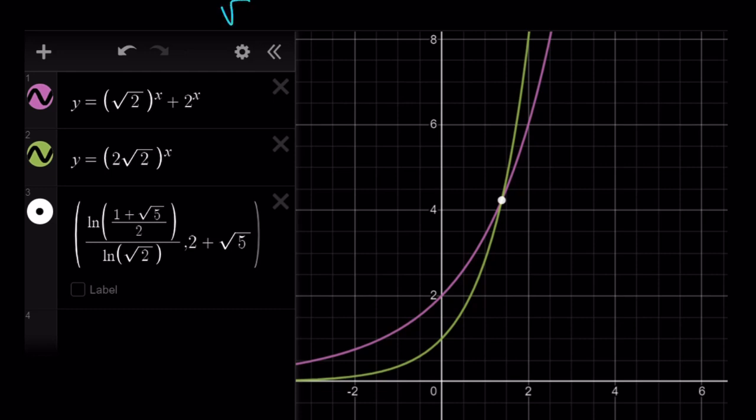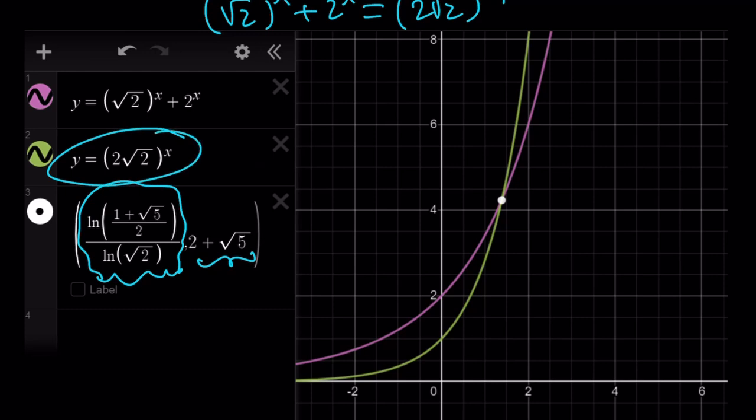So remember, our original equation was like this. So we're kind of looking at the intersection point of two functions. And that happens to be at this point, where x is equal to ln 1 plus root 5 over 2 divided by ln root 2. And that's the y value if you plug it in, because this is a cubed. I hope that makes sense. And notice that the green graph is going to grow faster. First it's slow, and then they're going to intersect, and then they'll never intersect again. So we have a unique solution.